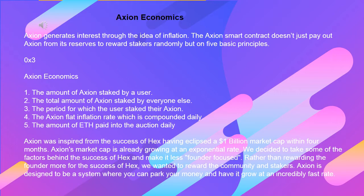Axion Economics: 1. The amount of Axion staked by a user. 2. The total amount of Axion staked by everyone else. 3. The period for which the user staked their Axion. 4. The Axion flat inflation rate, which is compounded daily. 5. The amount of ETH paid into the auction daily.